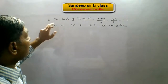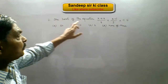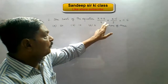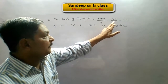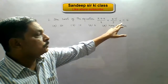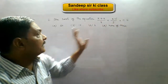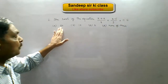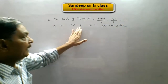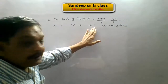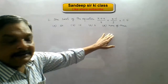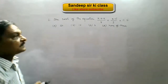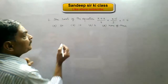The second problem: the root of the equation (x plus 4) upon 4 plus (x minus 5) upon 3 equals 11. The options are: A — 20, B — 10, C — 2, and D — none of these. Now let us solve this equation.